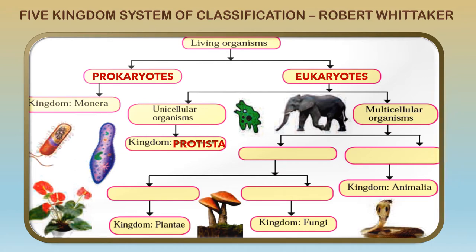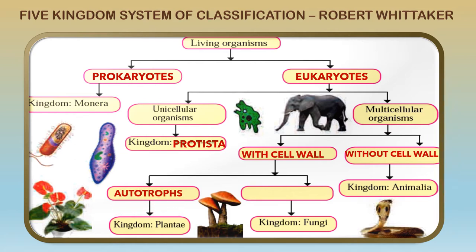The multicellular organisms are again subdivided into those having a cell wall and those without a cell wall. Those having a cell wall are classified according to feeding habits — autotrophs which prepare their own food, and heterotrophs which do not prepare their own food. Autotrophs form the third kingdom called Plantae, whereas heterotrophs with a cell wall give the next kingdom called Fungi.